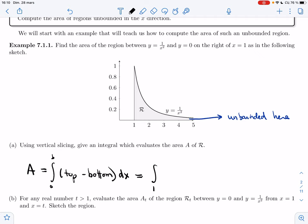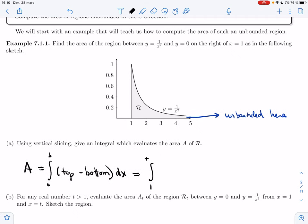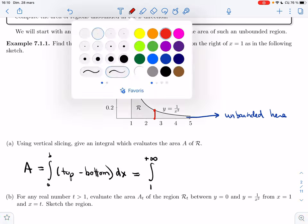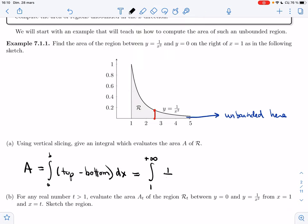b is the rightmost, but there isn't one, so we'll put that you just keep going to infinity. And then if I look at these slices, top would be 1 over x squared, bottom is 0 dx. And so the integral I'm trying to make sense of is the integral from 1 to infinity of 1 over x squared dx.